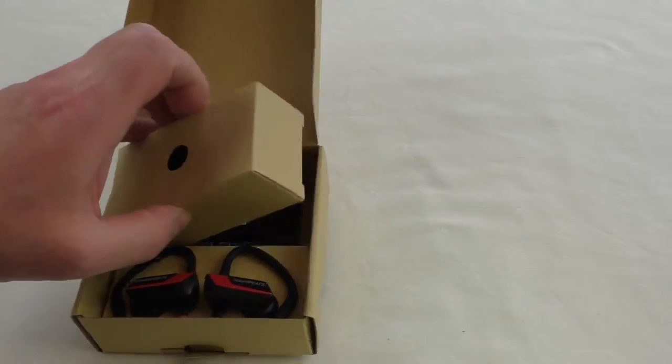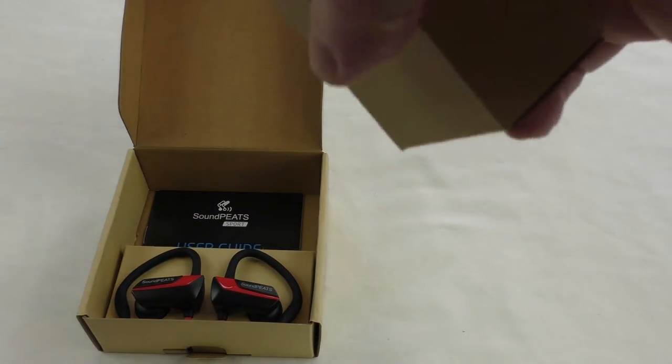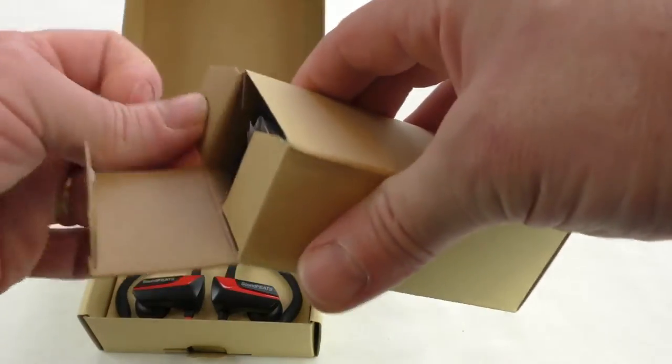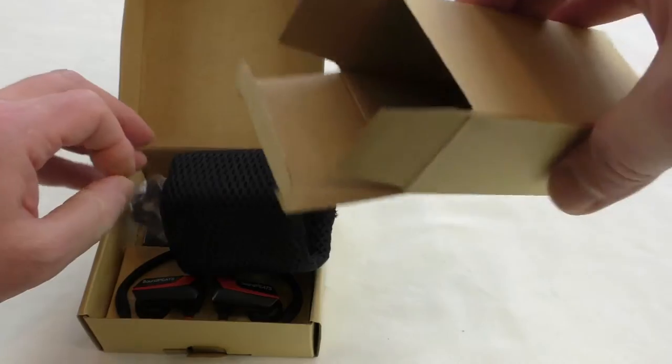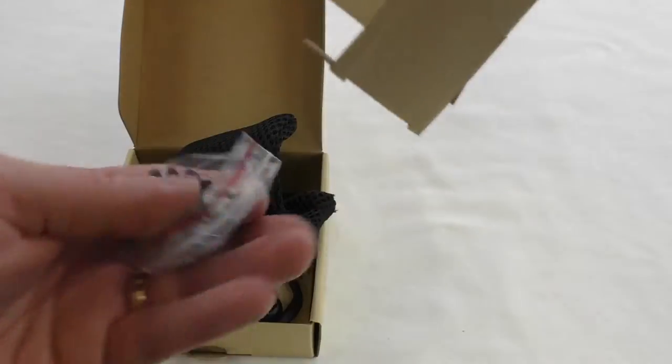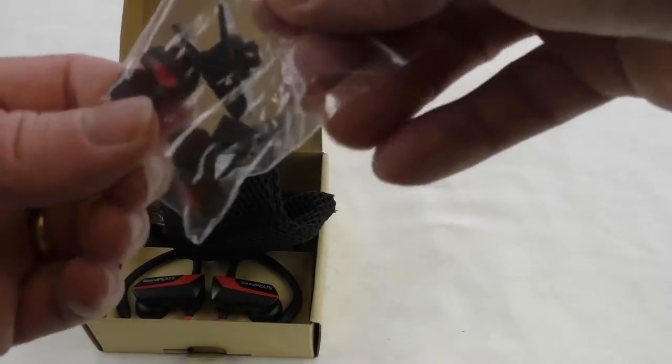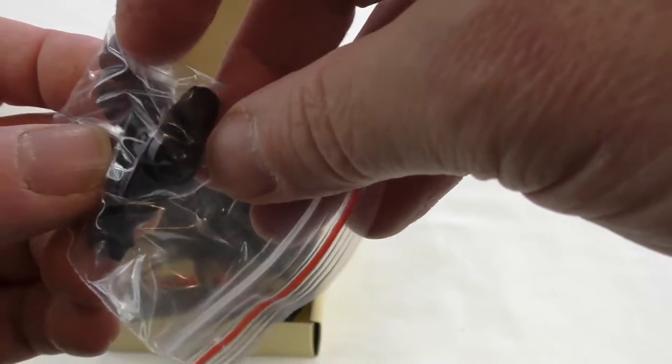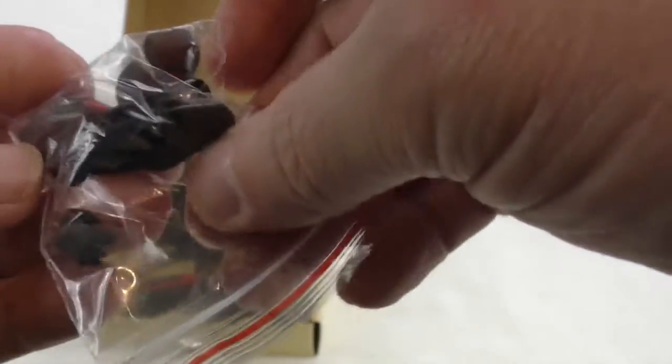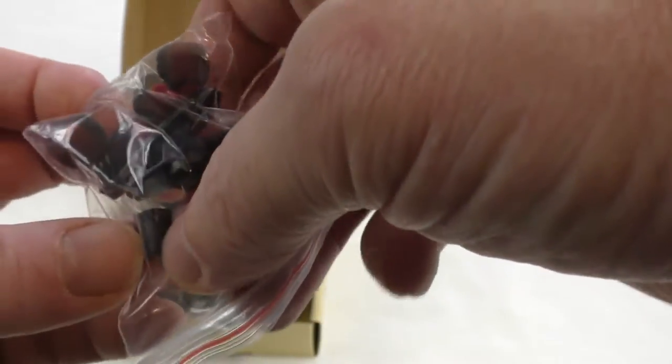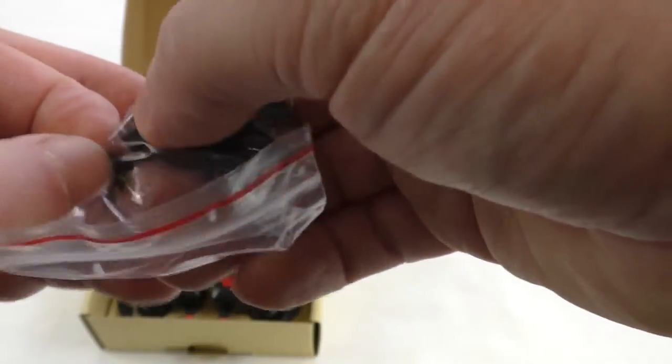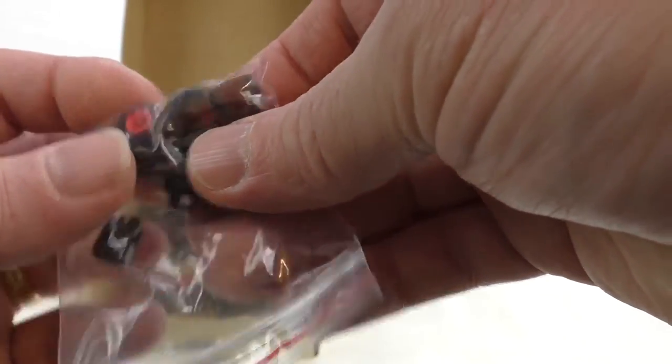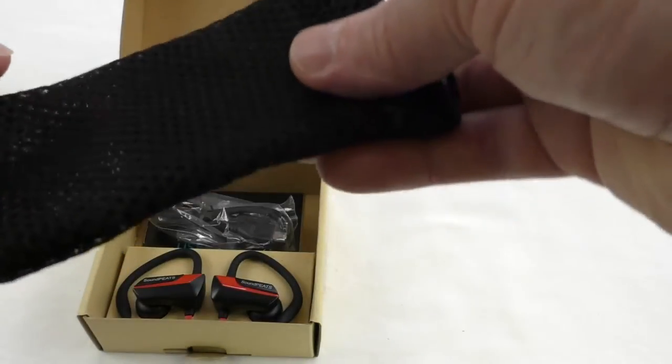Let's see what else we get. That's nice, you get a little pouch - that's a nice surprise. I like to see that sort of thing. We've got a bag there with a little clip, which I'm not quite sure why they supply unless that's for joining together. We've got a little thing there for shortening the cable, and another two sets of ear tips.